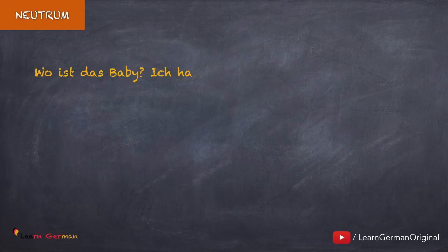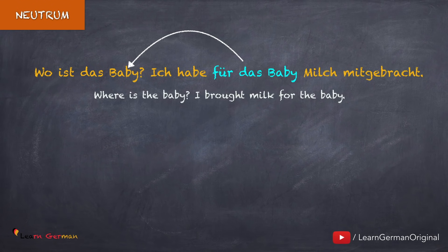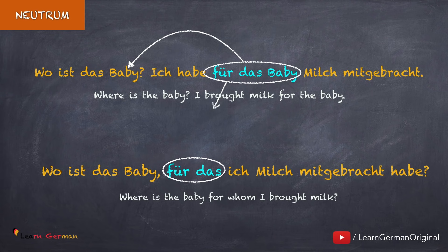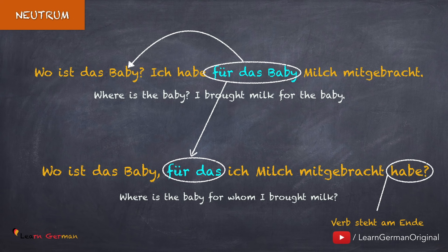Hier ist das Beispiel für Neutrum mit Präposition: Wo ist das Baby — ich habe für das Baby Milch mitgebracht. Der Relativsatz lautet: Wo ist das Baby, für das ich Milch mitgebracht habe? Der Relativsatz beginnt mit der Präposition für, danach kommt das Relativpronomen für Neutrum — das — und das Verb steht am Ende.